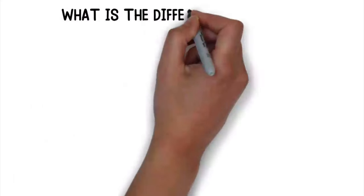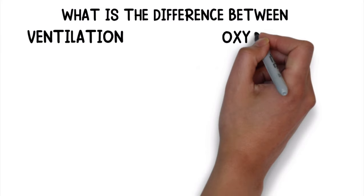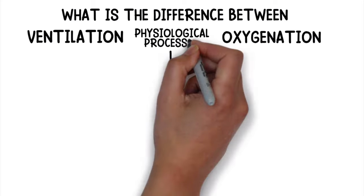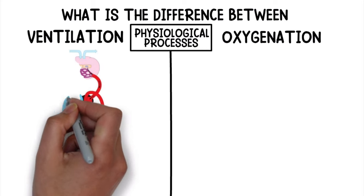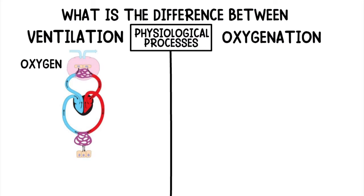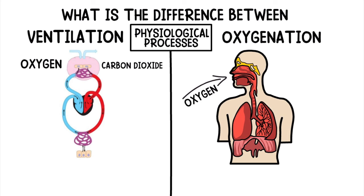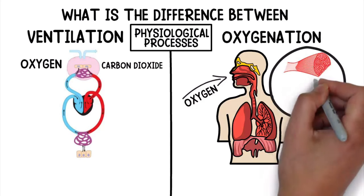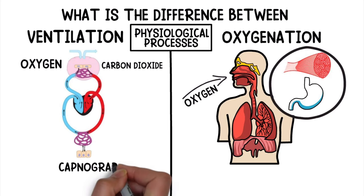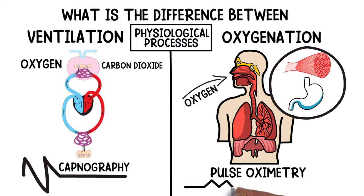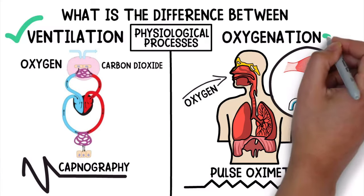So now you may be wondering, what is the difference between ventilation and oxygenation? Ventilation and oxygenation are fundamentally different physiological processes. Ventilation refers to the patient's ability to take in oxygen and remove carbon dioxide. Oxygenation refers to the patient's ability to take in oxygen from the lungs and distribute it to the tissues and organs of the body. Capnography can be used to monitor the patient's ventilation status, whereas pulse oximetry can be used to monitor their oxygenation status. Each process is fundamentally different; however, both are required in order for us to survive.